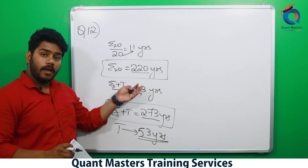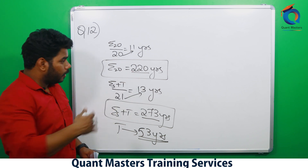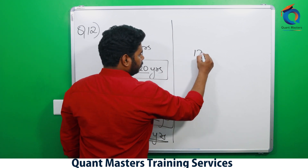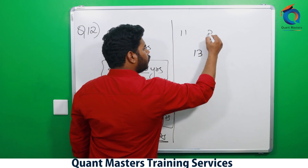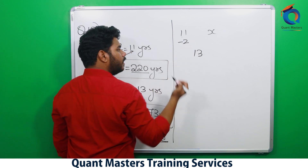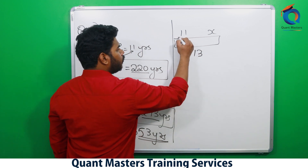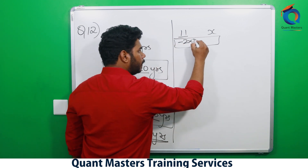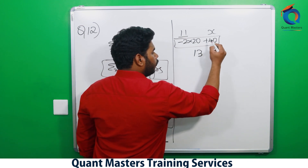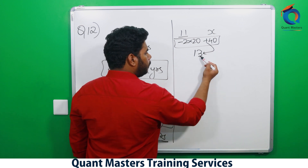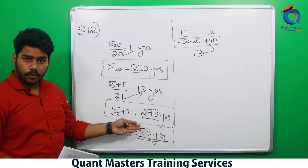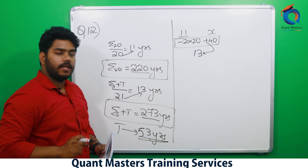That is Method 1, how 99% of people solve. Let's try Method 2. The final average is 13, the initial average was 11. Let the teacher's age be x. The initial average is 2 less than 13, across 20 students, so multiply: -2 × 20 = -40. To make it 0, we need +40, meaning x is 40 more than 13: 40 + 13 = 53 years. Same answer, much faster.